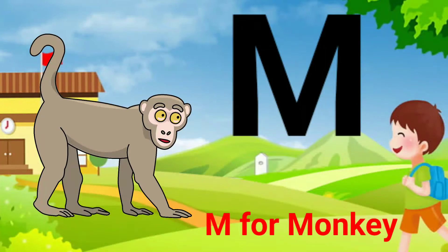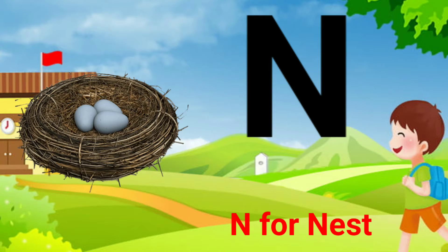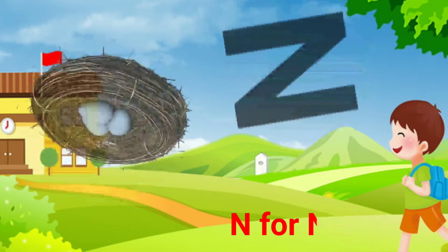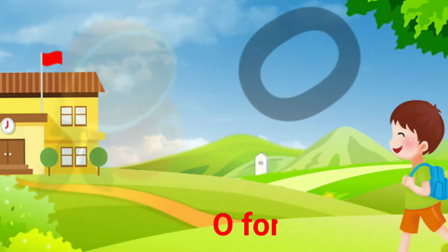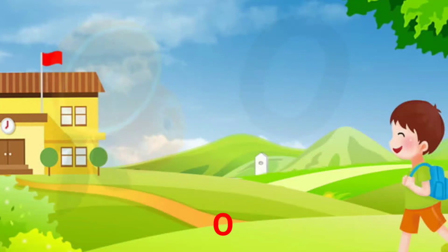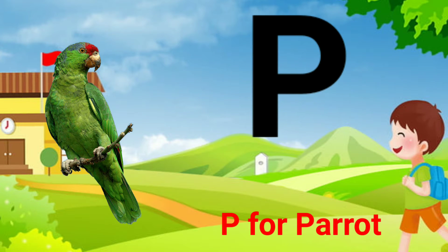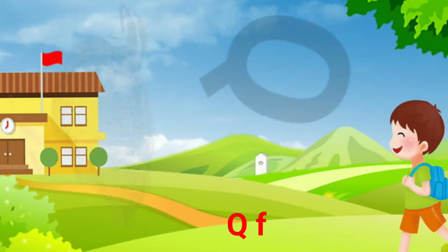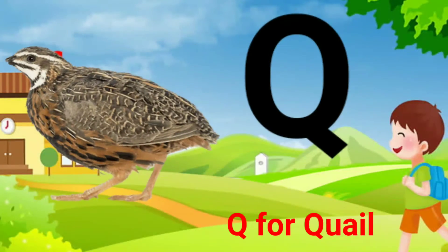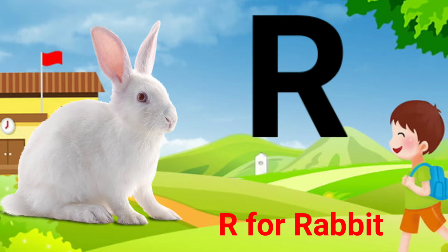M for monkey, N for nest, O for orange, P for parrot, Q for quail, R for rabbit.